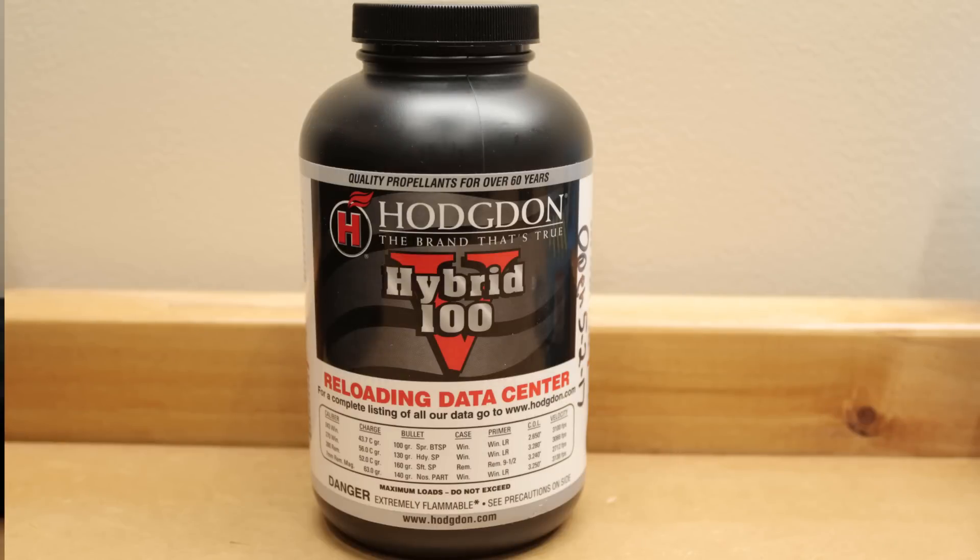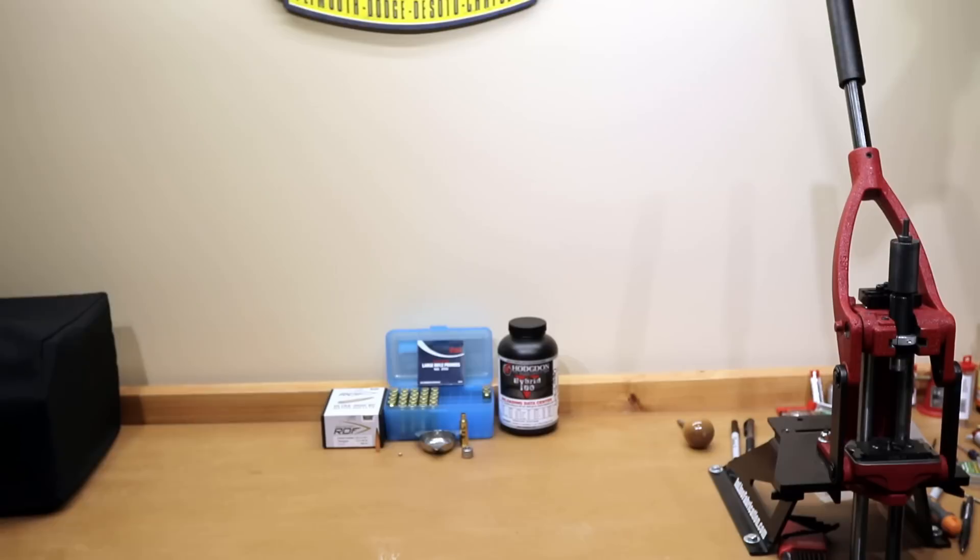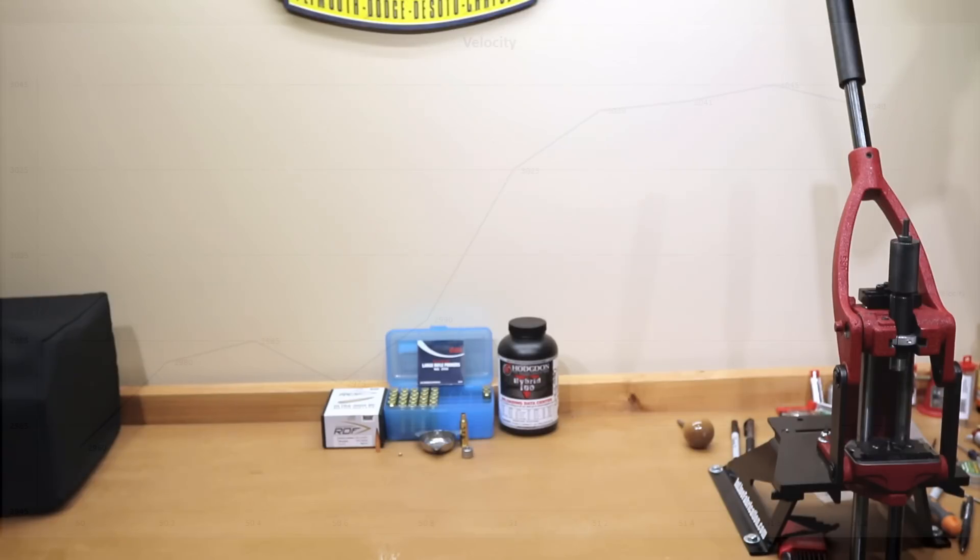As you can see, our powder for today is going to be Hodgdon's Hybrid H100V. Now obviously for this strategy to work, consistency in our reloading process is paramount. If we have inconsistencies in our process, the data will not mean anything to us. In their video, he's finding very large pressure nodes, relatively the same velocities over 6 tenths of a grain, and ending up with a load that had an extreme spread of the velocity of not much over 5 feet per second.